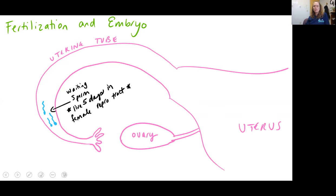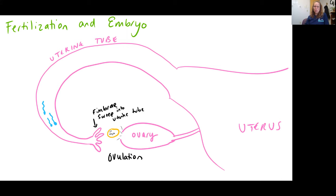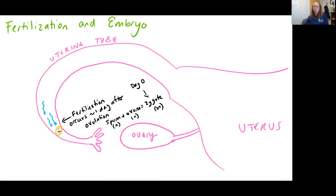Looking at the female reproductive tract, we see that sperm have made their way to the uterine tube. Those sperm can make their way here in a matter of 30 minutes to a couple of hours, and they can actually live in the female reproductive tract for about five days. So as long as you're having intercourse around five days of ovulation, you can have possible implantation. When we talk about ovulation, we see the release of a secondary oocyte into the pelvic cavity, but the fimbriae sweep that oocyte into the uterine tube where it can come in contact with sperm. Fertilization typically happens within one day of ovulation.